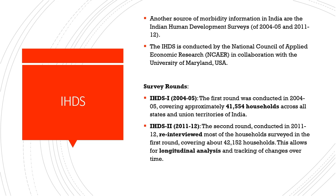So far we have two data points available for IHDS: 2004-05 and 2011-12, with a new round promised soon. It is conducted by the National Council of Applied Economic Research in collaboration with the University of Maryland, USA. The first round, IHDS 1, was conducted in 2004-05, covering approximately 41,000 households across all states and union territories. In the second round of 2011-12, most households covered in the first round were re-interviewed, allowing for longitudinal analysis and tracking of changes over time — a unique exercise not carried out by official data sources.